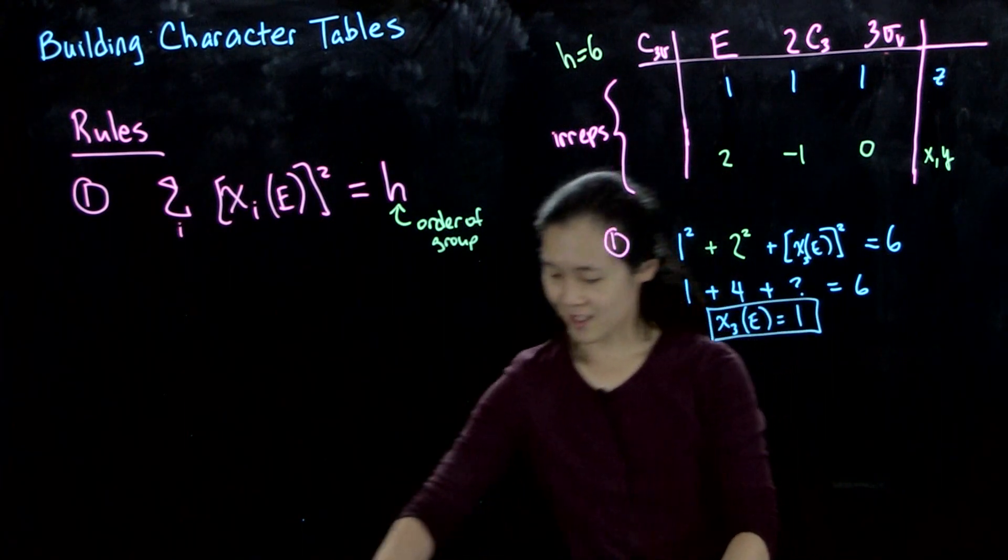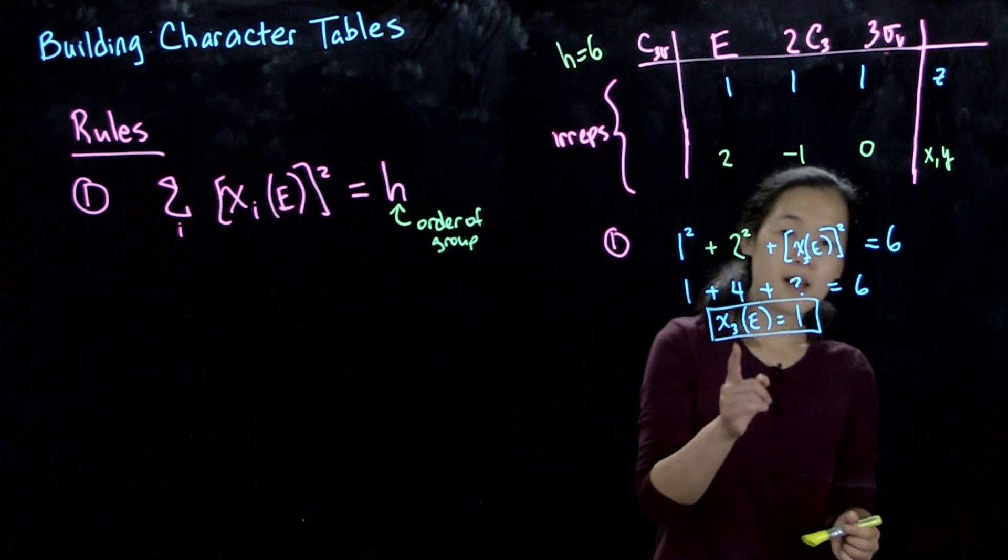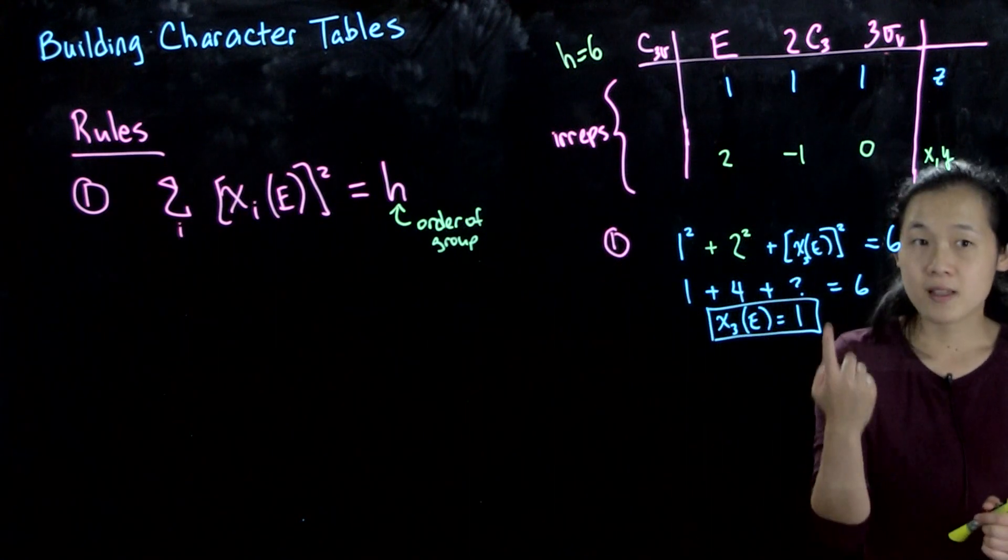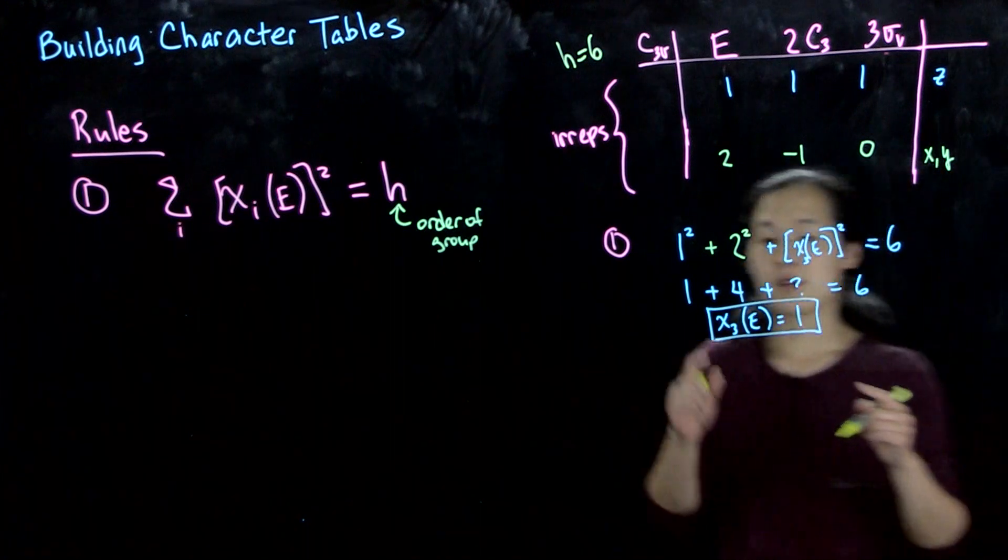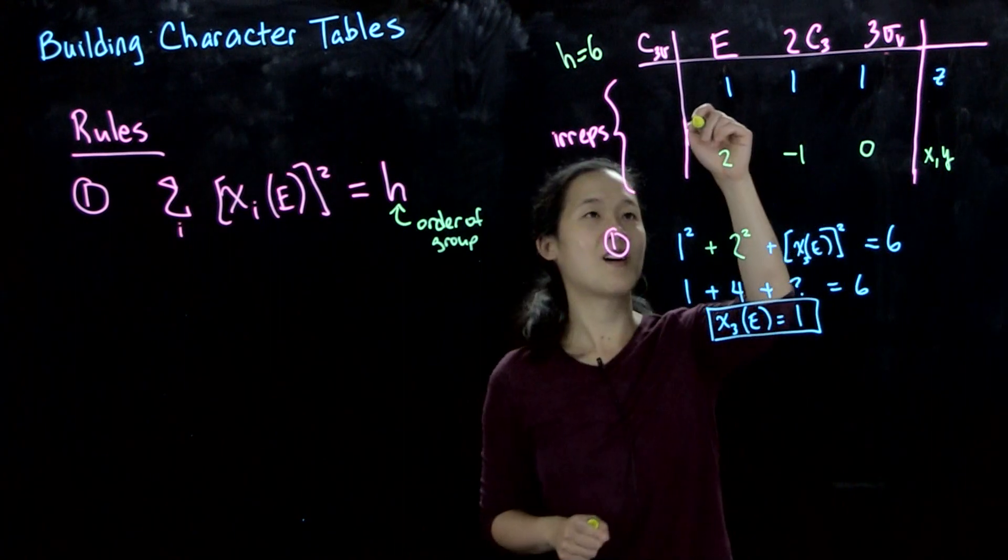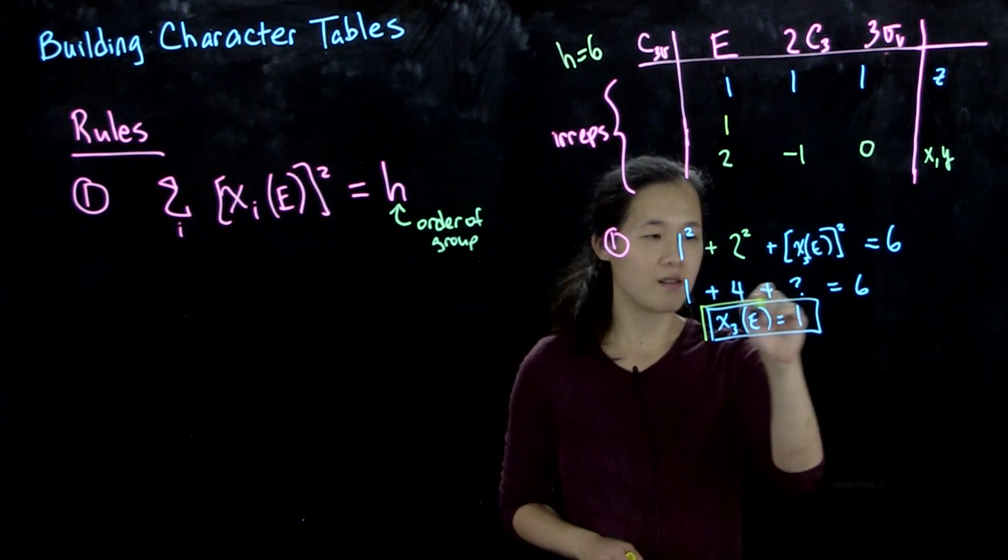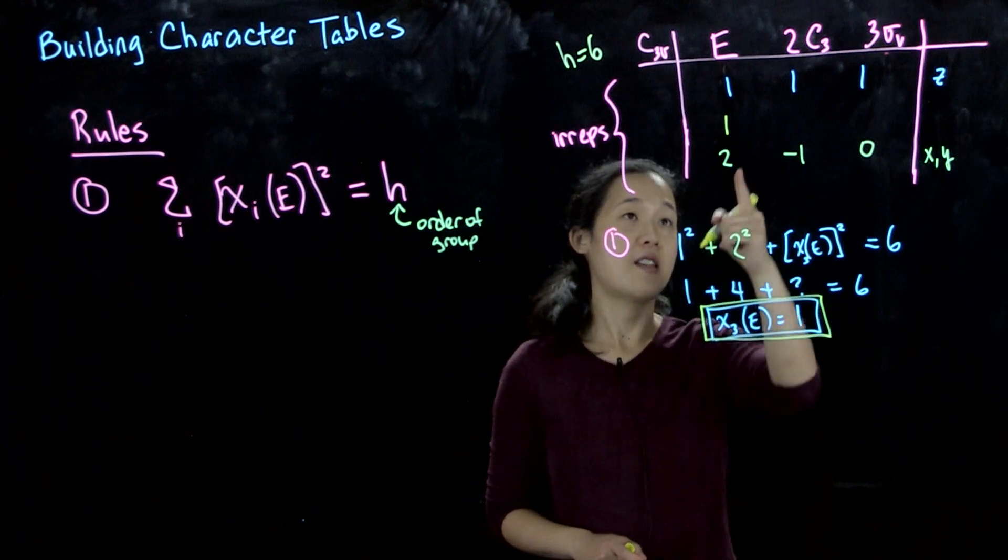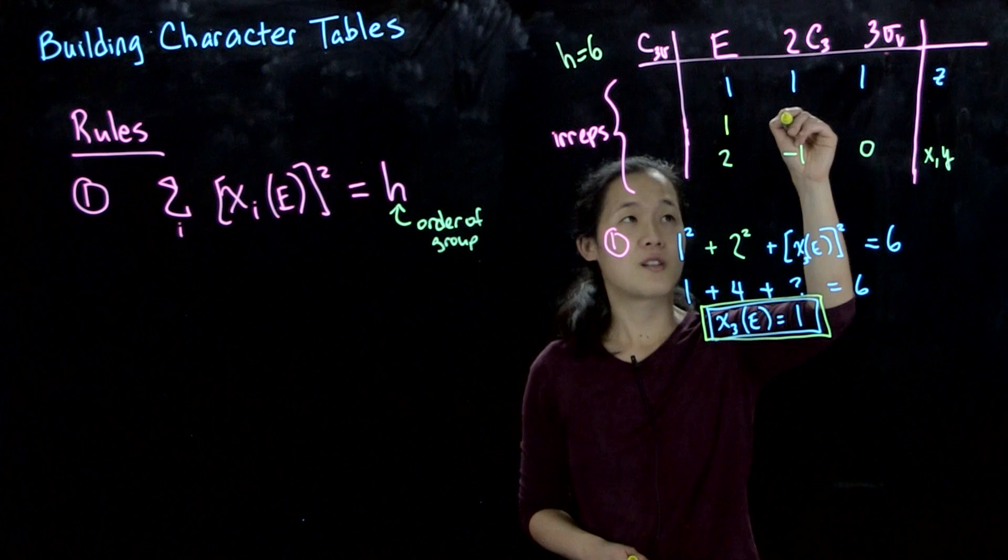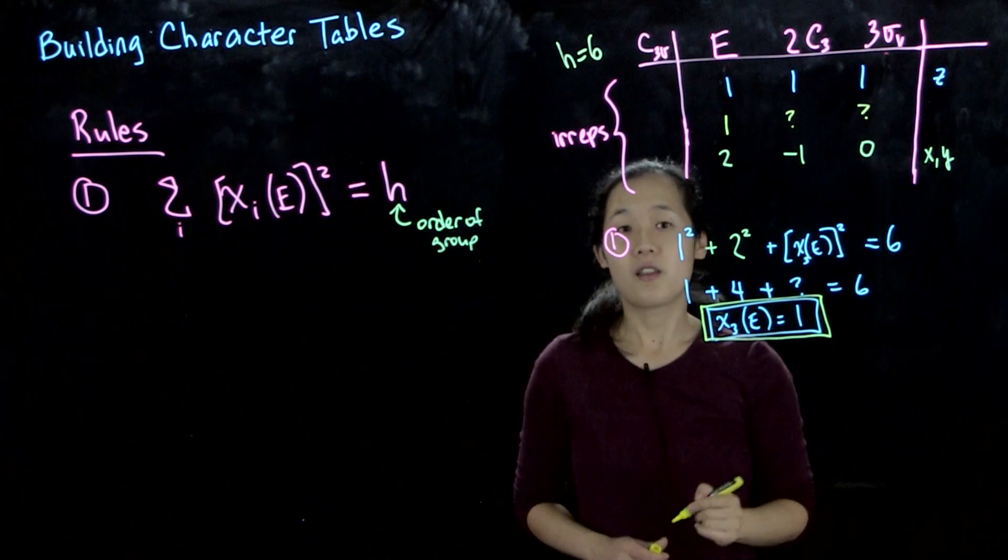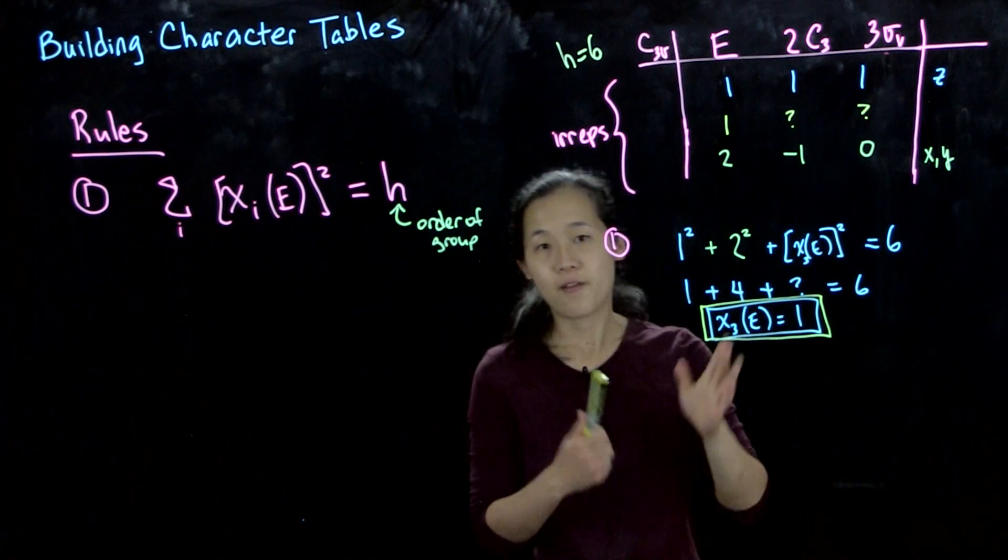Therefore chi equals one. So what we know is that since this is one, we can't be missing more than one row. So therefore we know that there's a missing row, and our missing element is one.